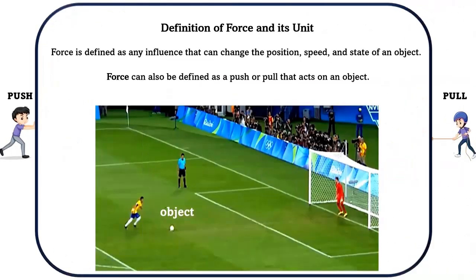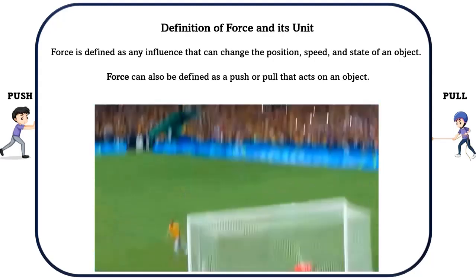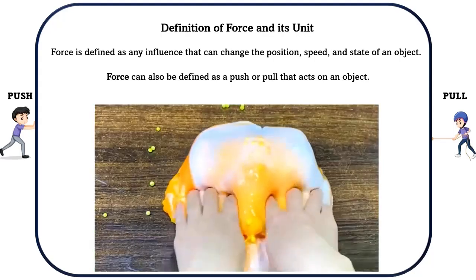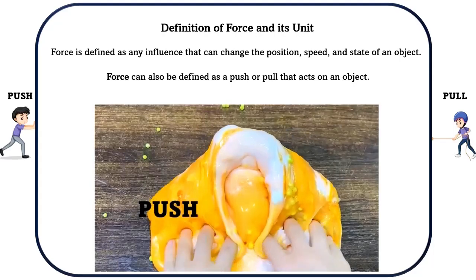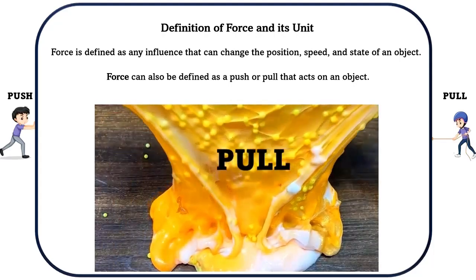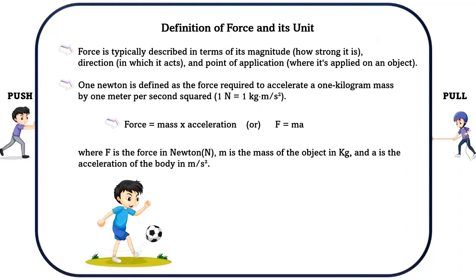Definition of force and its unit. Force is defined as an influence that can change the position, speed and state of an object. Force can be defined as a push or pull that can act on an object. Force is typically described in terms of its magnitude — how strong it is — direction in which it acts, and point of application where it is applied on an object.